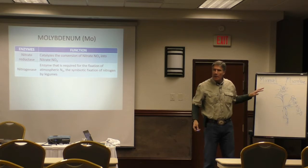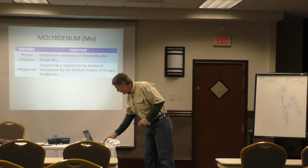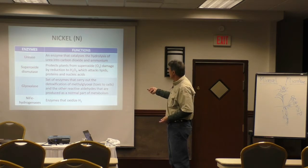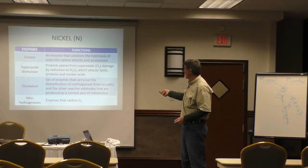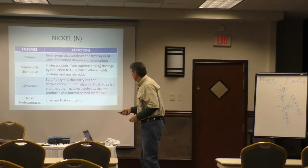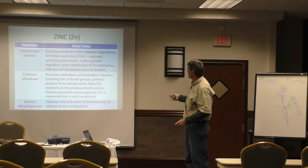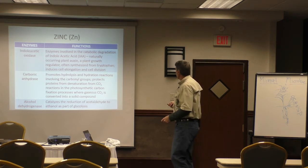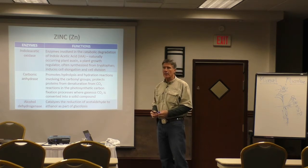Molybdenum gets nitrogen converted from nitrates on one side to protein on the other side — nitrates are toxic, but proteins won't kill things, so this conversion is critical. Nickel activates the enzyme superoxide dismutase, which is how plants largely detoxify themselves and stop different types of cellular damage. Zinc runs over 300 enzymes — including production of indole-3-acetic acid, carbonic anhydrase, and protection of proteins from denaturing in CO2 reactions during photosynthesis and carbon fixation.